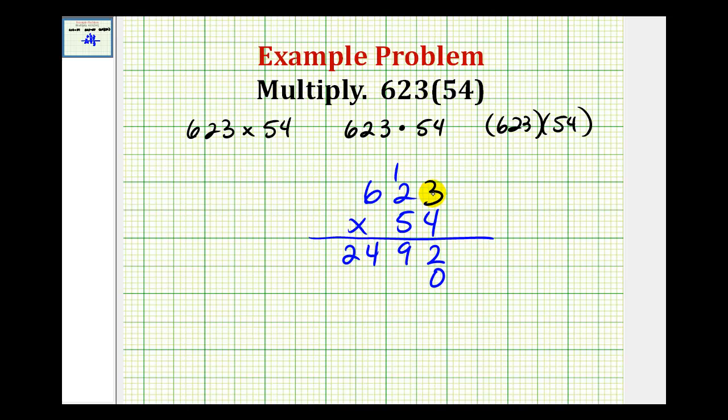So, 5 times 3 would be 15. So, we put a 5 in the tens column here. And we carry a 1. 5 times 2 is 10 plus 1, that's 11. Carry a 1. And then, 5 times 6 would be 30, plus 1, is 31.